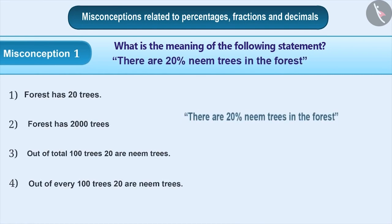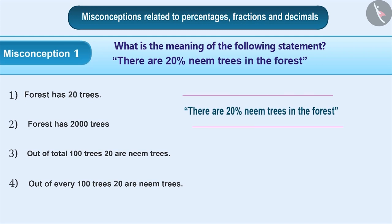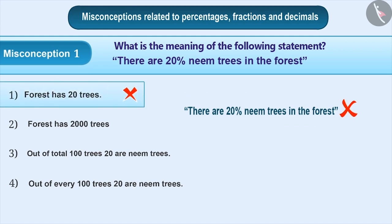Many times, students fail to understand the concept of percentage. When they read these kinds of statements, they understand them in the wrong way. Here, some students ignore the percentage sign and assume that there are 20 trees in the forest. This is an incorrect understanding. Therefore, option 1 is incorrect.